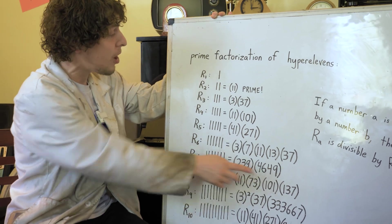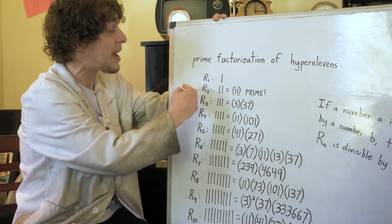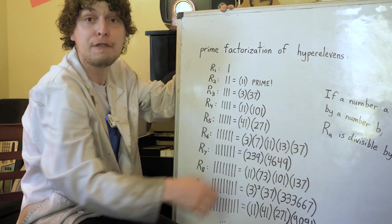Like the fourth and eighth one are divisible by the second, the sixth one's divisible by the second or third, the tenth's divisible by the second or fifth.